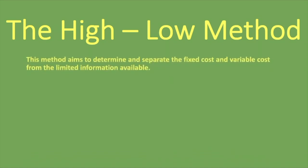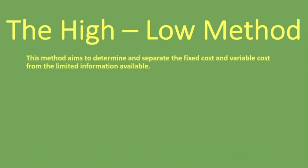Welcome to Countards. In this lesson, we're going to be looking at the high-low method. This method aims to determine and separate the fixed cost and variable cost from the limited information available. You are given information and you have to determine what the variable cost is and what the fixed cost is in order to make decisions. The high-low method shows you what the variable cost is — usually per unit — and what the fixed cost is with the limited information available.